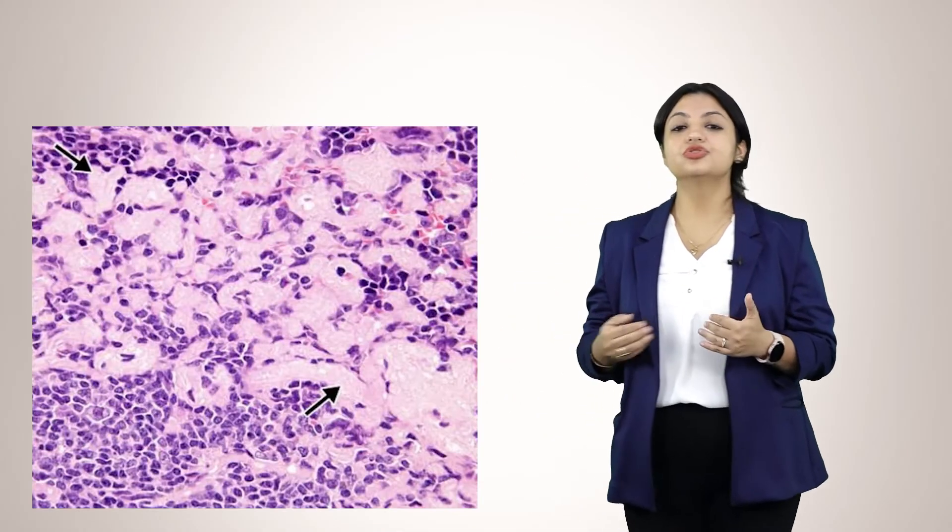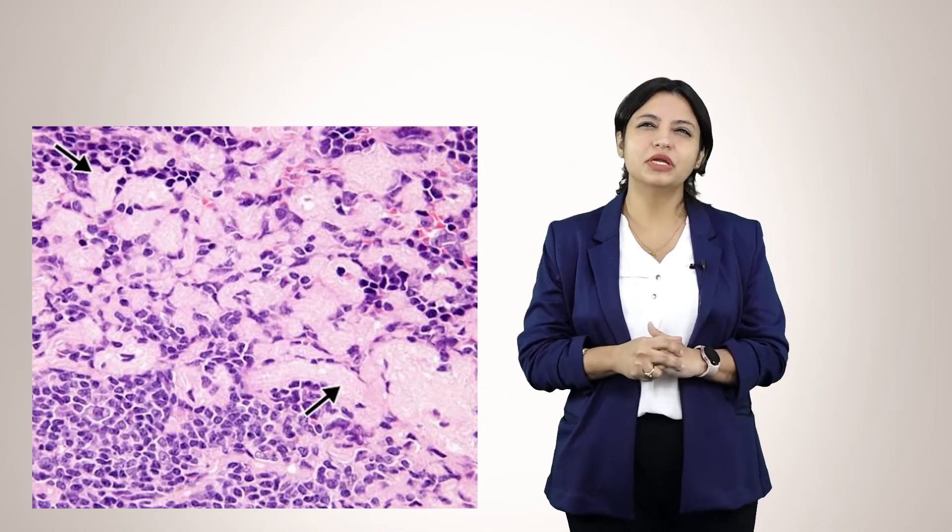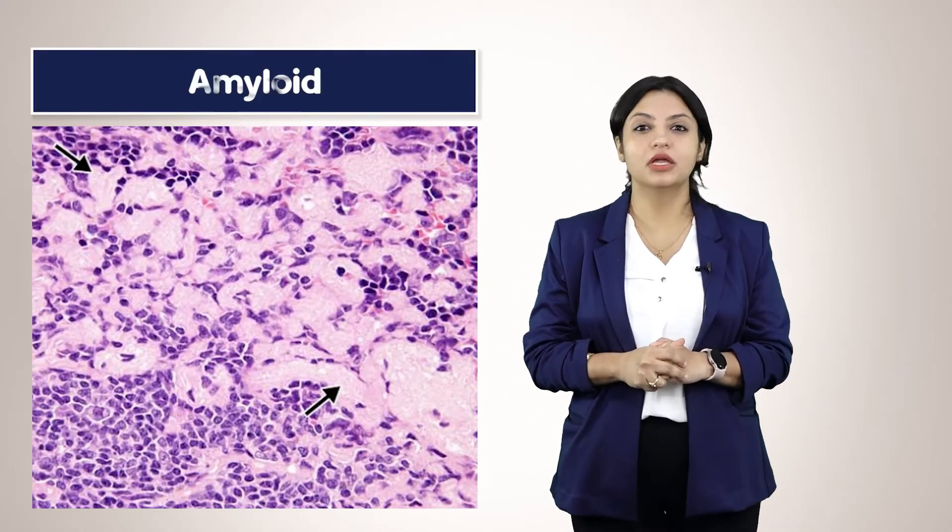Apart from cytoplasm, you should know that various inclusions can also have a pink color. Pink color is usually for proteins and also for glycogen. Many things can be pink, but you should be clear that cytoplasm is pink and some inclusions are pink. For example, a large pink extracellular deposit could be amyloid.